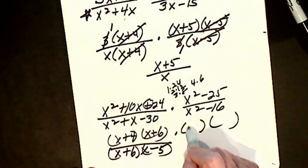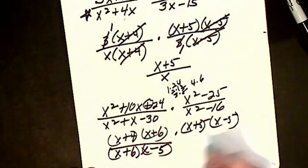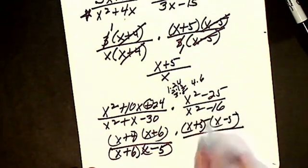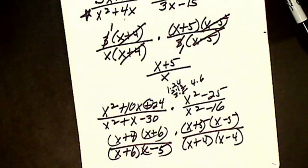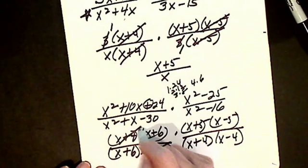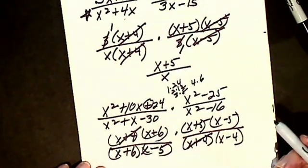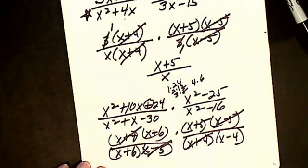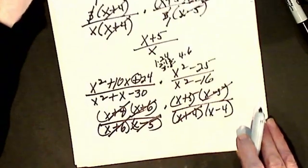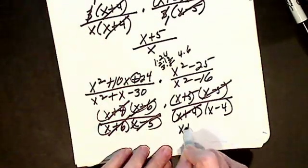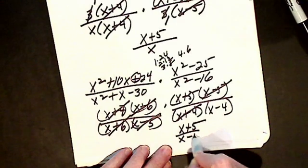I factor difference of 2 squares. I factor difference of 2 squares. Now I can cancel. Let's see. It's 1 for 1. 1 numerator for 1 denominator. x plus 4, x plus 4. x minus 5, x minus 5. x plus 6, x plus 6. So it looks like I am left with x plus 5 divided by x minus 4.